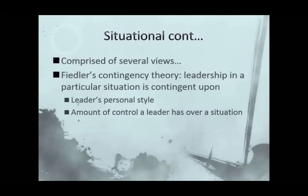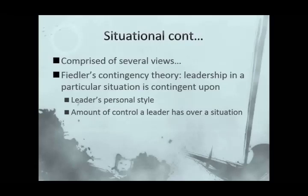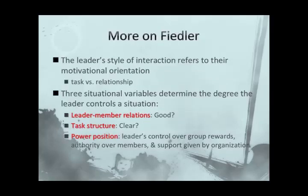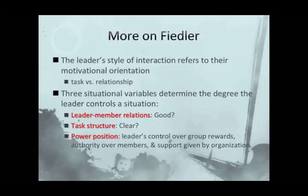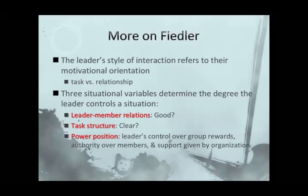Contingency theory is sort of the most popular situational approach. From a contingency theory point of view, the personal style of the leader — and this goes back to causal attribution — and your position within the organization determines how much control the leader actually has over the situation. The leader's style and how they interact with others refers primarily to motivational orientation: are you focused on the task or the relationship? They also identify major situational variables: leader-member relations, task structure, and the power position.